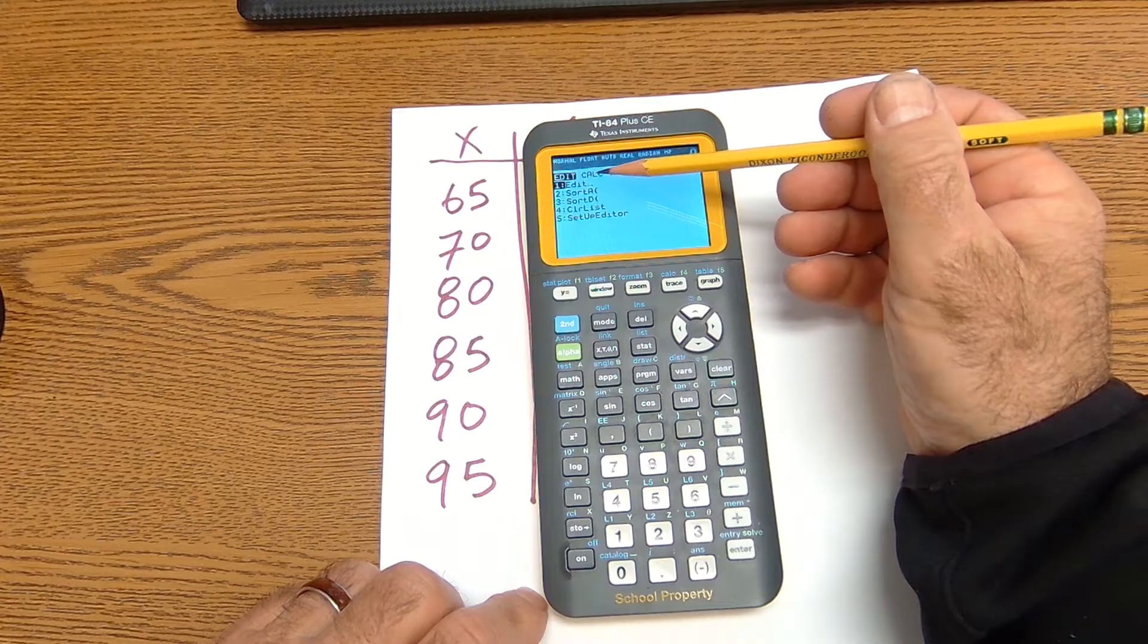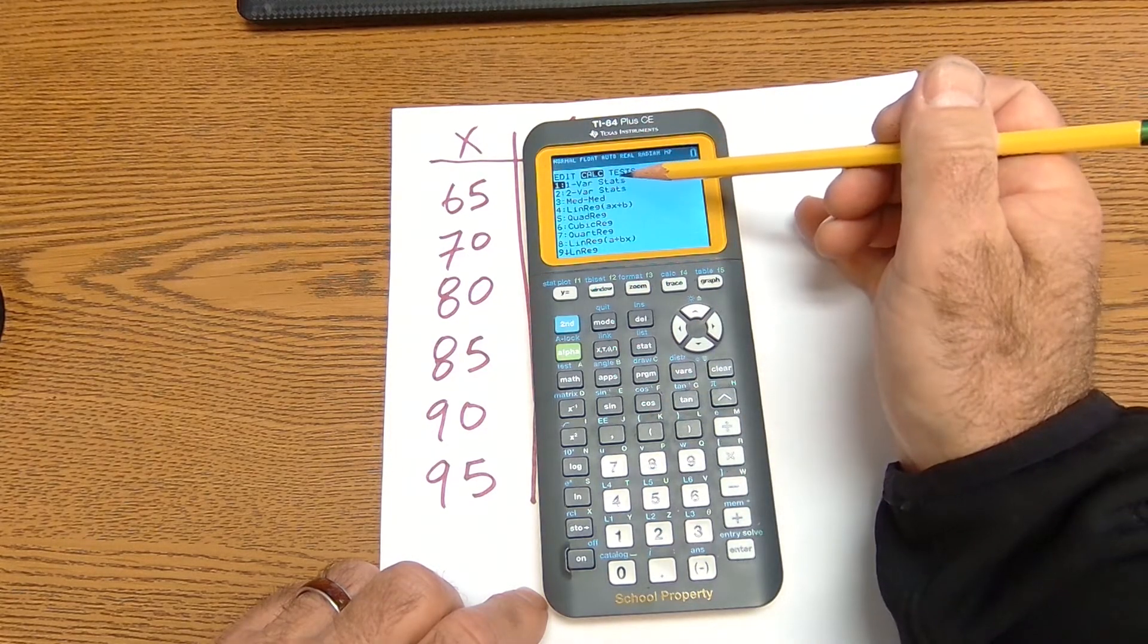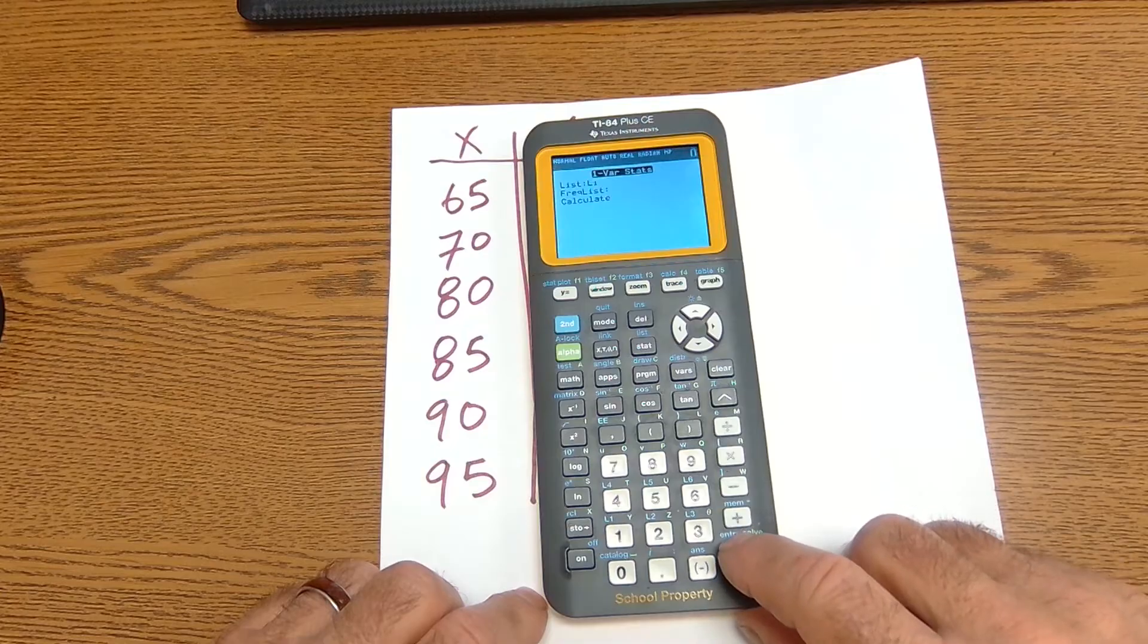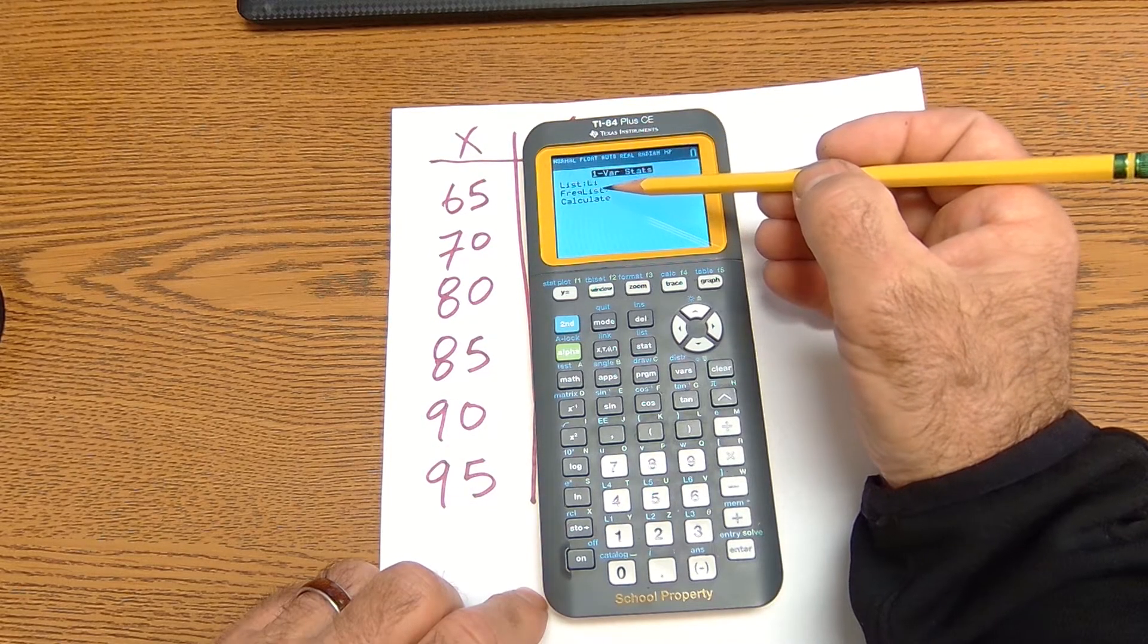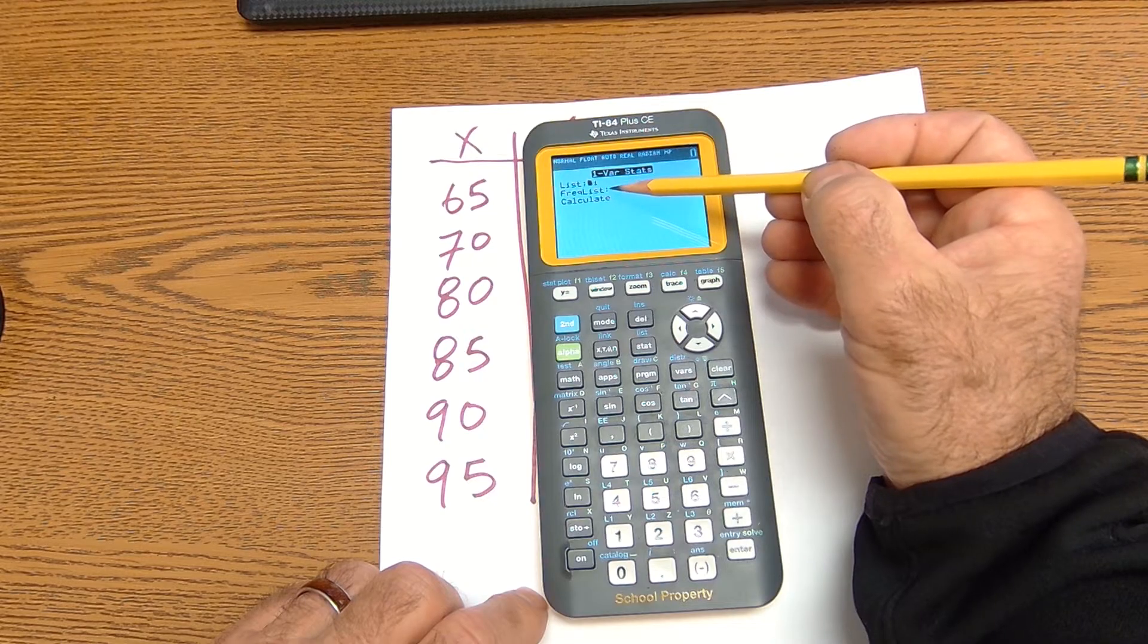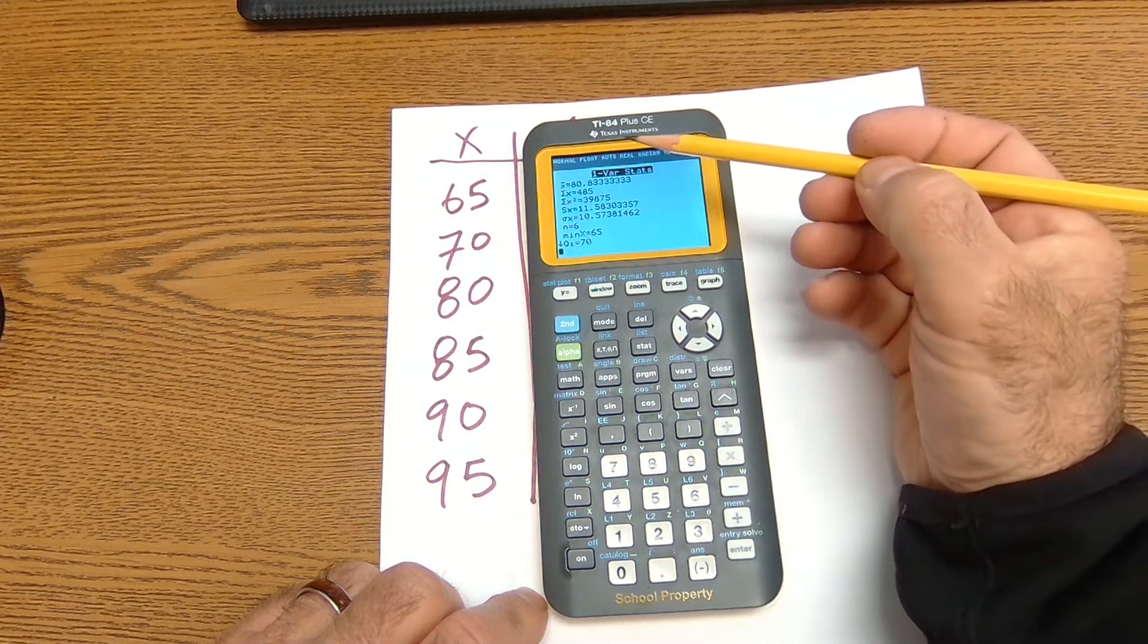Then I go back to stat. I want to run a calculation, so I scroll over to calculate. I'm doing one variable statistics. I hit enter. I'm doing one variable statistics on list one. There is no frequency corresponding to that. And I'm going to go down and hit calculate. And then there are my stats.